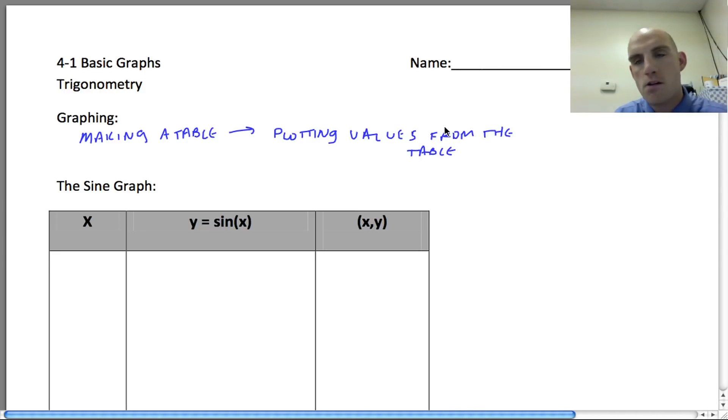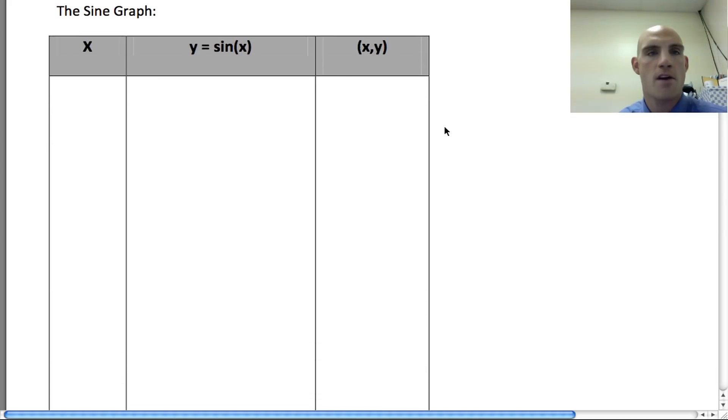When we look at sine or any type of function that we're going to be trying to graph, the key to making a successful graph, really making a successful table, is to pick values that help us. When we look at the sine graph, I've got my x, which is what I'm going to pick to put in, my y = sin(x), which is when I'm actually going to do the function, and then my (x,y) based on what I get. It's all about picking key values. Fortunately for us, we've been spending a bunch of time doing this by looking at the unit circle.